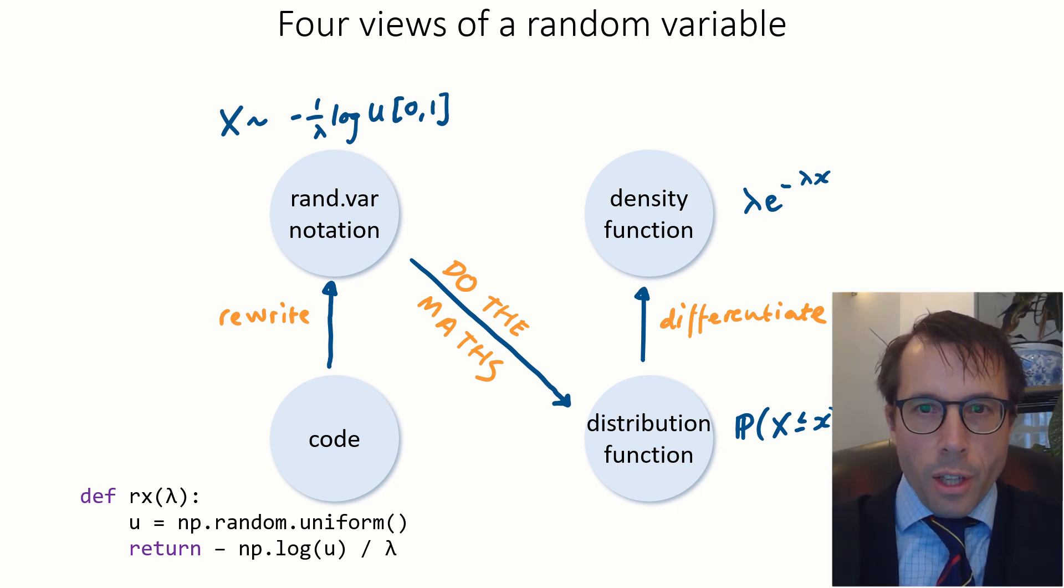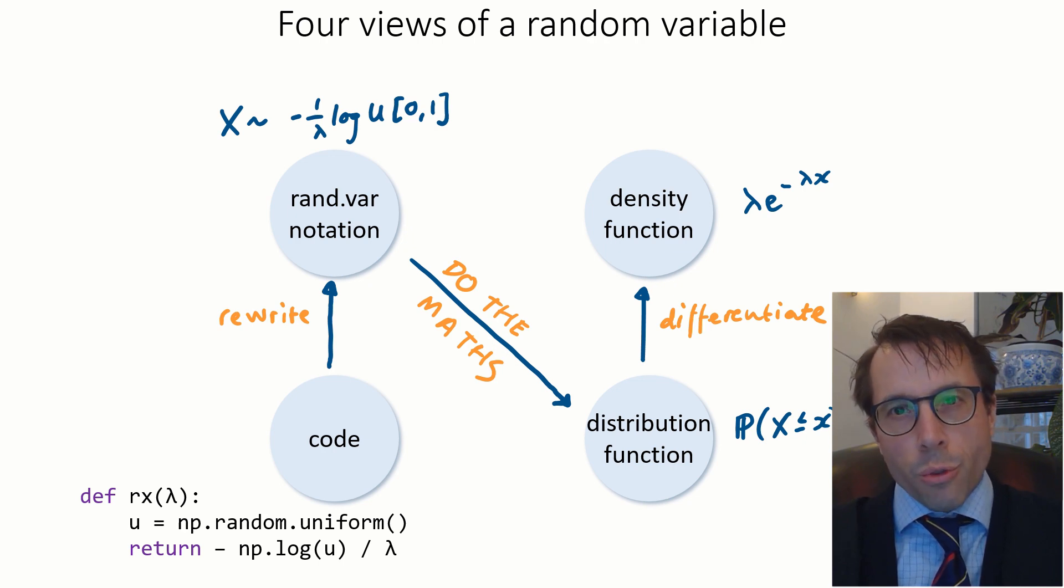What I want to stress here is that when we talk about random variables and probability models, all of these four descriptions are exactly as good as each other. They're all describing the same thing. None is the correct way to write out a probability model. They're just different views of exactly the same thing. So when you're reasoning about probability models, you're free to choose whichever view is easiest to work with for the problem you're currently working on.